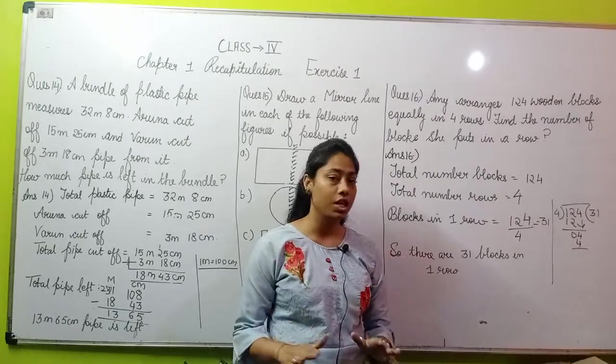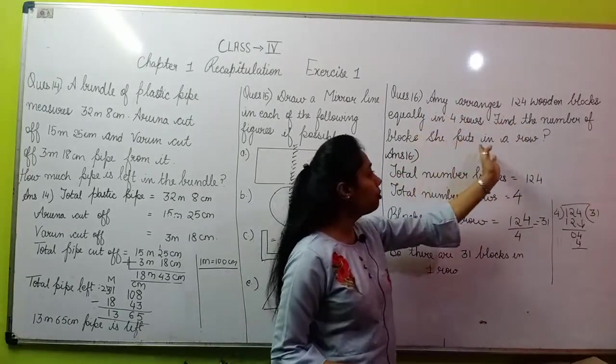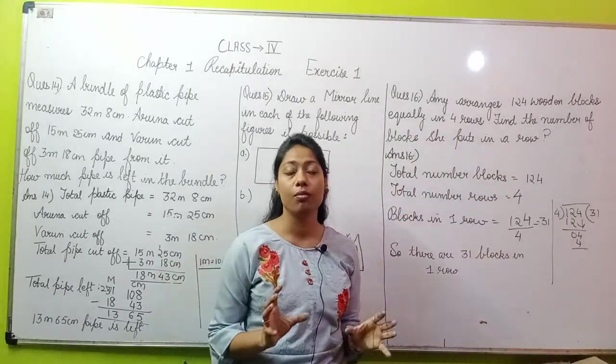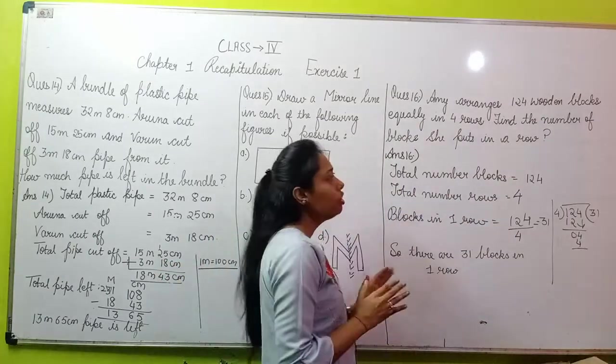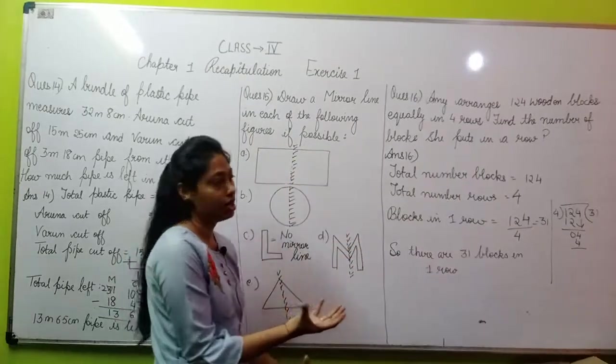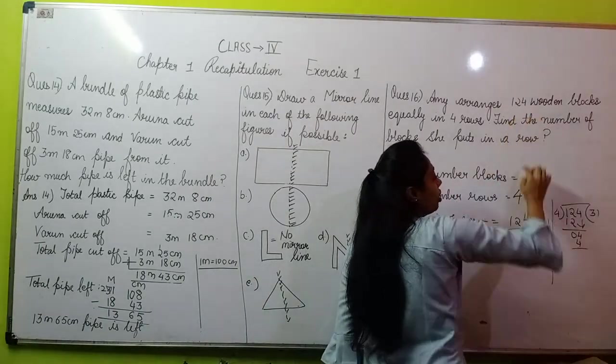Amy has arranged 124 boxes in 4 rows. Find the number of blocks she puts in a row. How many blocks are equal in each row? We are going to find the number of blocks.